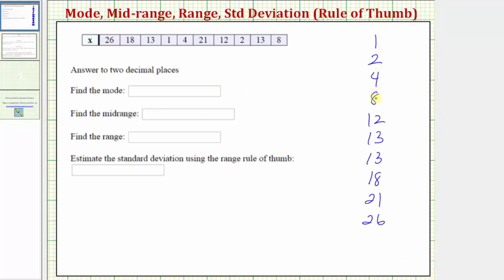So looking at the data ordered from least to greatest, notice how we can quickly see that the data value of 13 occurs the most, it occurs twice, and no other data values occur twice or more, and therefore the mode is 13.